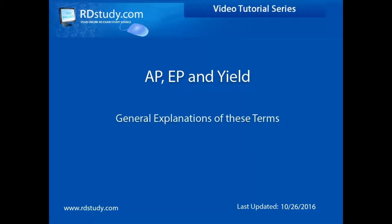AP, EP, and yield are three very important related terms when it comes to food production. This video will briefly define them and explain their relationship.